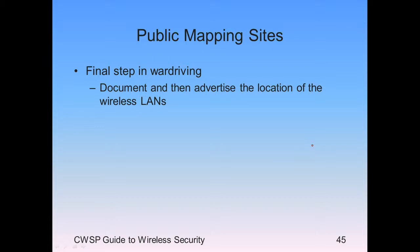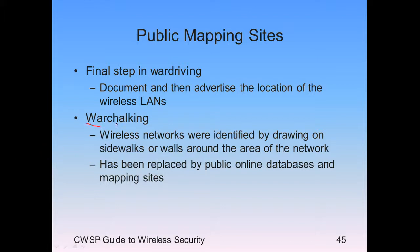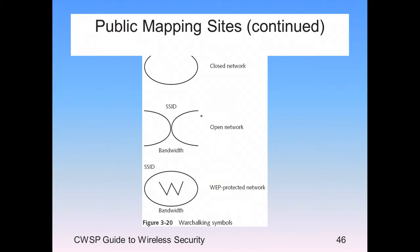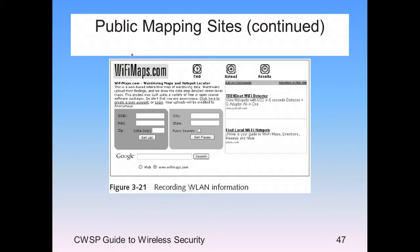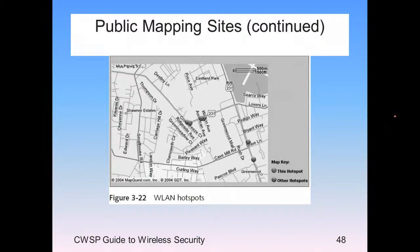The final step is to document and advertise the location. There are websites where you can search for wireless access points in your area. War chalking is physical marking with chalk of information about an access point — it's been largely replaced by online public databases and mapping sites like Google. The symbols include web protected, closed network, and SSID bandwidth for an open network. If you search for 'public Wi-Fi' or 'free Wi-Fi' in Google, you'll typically get a map of ones in your vicinity.